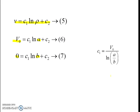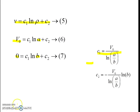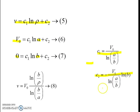Solving equations 6 and 7, c1 is obtained as V0 / log(a/b), and c2 is given by -V0 * log(b) / log(a/b). Substituting c1 and c2 into equation 5, we obtain the expression for potential: V = V0 * log(b/rho) / log(b/a). This expression gives the potential variation between the two conductors of the coaxial cable.